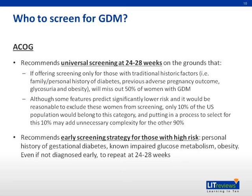Different societies also have different recommendations on who to screen for GDM. In America, ACOG recommends universal screening at 24 to 28 weeks — meaning anybody, whether or not they have risk factors. This is because screening only those with risk factors such as family or personal history of diabetes and previous adverse pregnancy outcomes was found to miss half of women with GDM. Attempts to exclude low-risk individuals added unnecessary complexity, so universal screening was recommended.